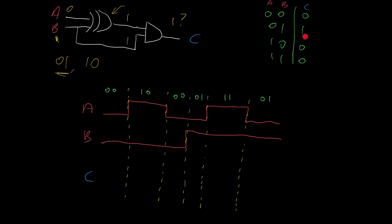We've got our truth table now, and we want to draw the timing diagram given these particular input waveforms. We work out when the input changes, then between the changes we work out the values of A and B, and finally we read off the answer from the truth table. Initially I've got 0,0 going in, so 0 is coming out. Then 1,0 means 0 out. Then 0,0 means 0 out. Then 0,1 means 1 is coming out. Then 1,1 means 0 is coming out. And 0,1 means 1 is coming out.